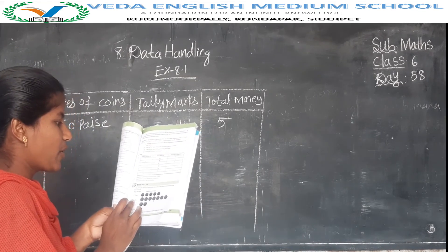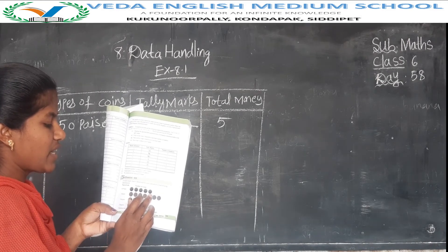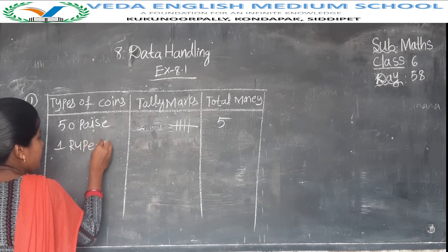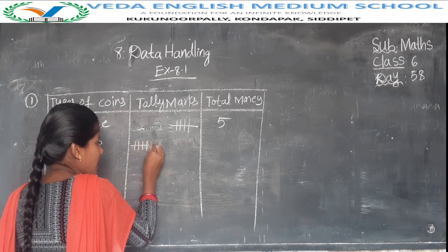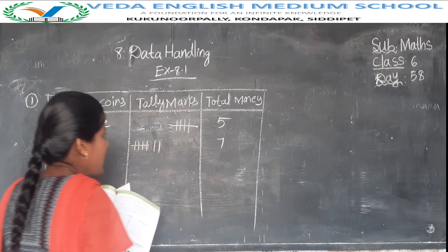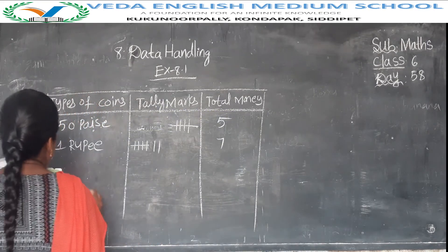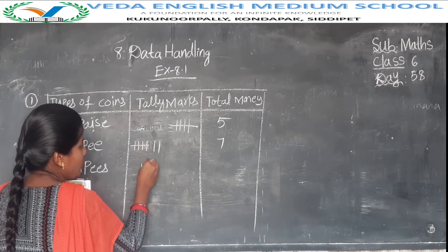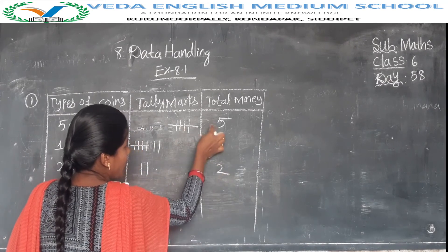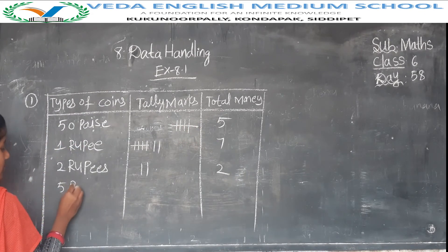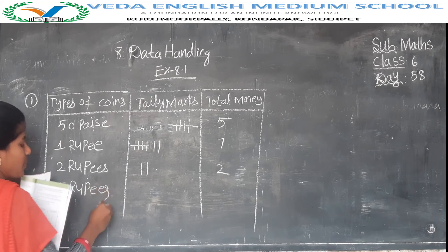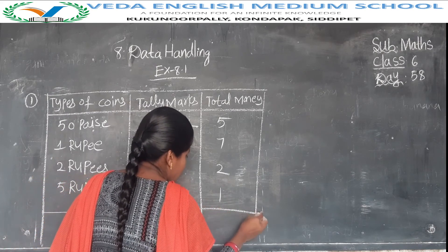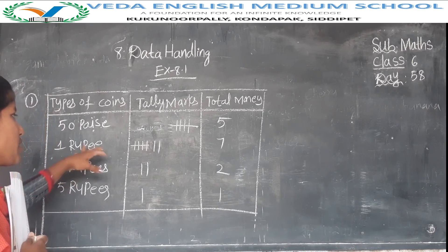One rupee coins: there are seven — tally marks showing seven. Two rupee coins: there are two — tally marks: 1, 2. Five rupee coins: there is only one — tally mark: 1. That is the frequency distribution table for these coins using tally marks.